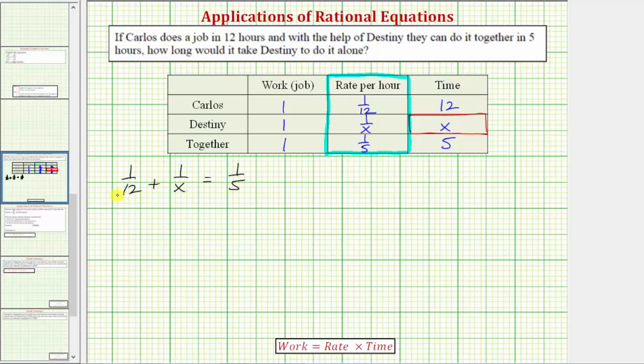Now to solve this equation we want to clear the fractions by multiplying both sides of the equation by a common denominator, hopefully the least common denominator. So in this case notice how the least common denominator would have to contain a factor of five, a factor of twelve, and a factor of x, and therefore the least common denominator is 60x. So to clear the fractions from the equation, we'll multiply both sides of the equation over each term by 60x.